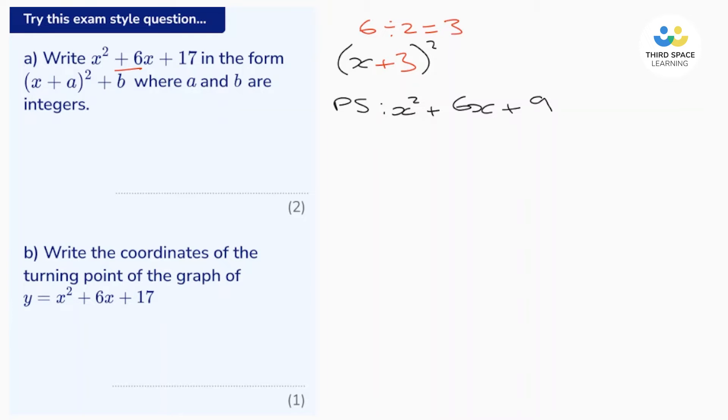Now let's compare that to the original expression. Well, the original expression is x² + 6x + 17. Now what do we have to do to the perfect square to give the original expression? Well, we have to add on 8 to it.